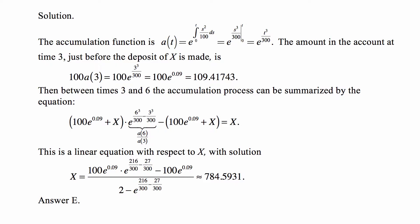The amount in the account at time 3, just before the deposit of x is made, is the accumulated value of the initial deposit of 100. So it's 100 times a of 3, which is 100 times e to the power 3 cubed over 300.